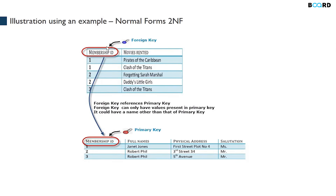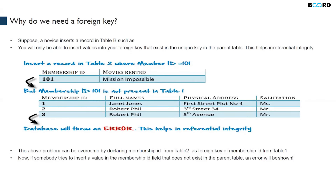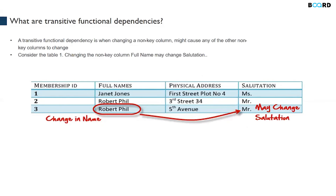A foreign key helps connect two tables through a relationship. Why do we need a foreign key? Let's say you're doing data entry and in table B you enter a value 101. If 101 is not present as a primary key value in the first table, the database will immediately throw an error saying that 101 is not available in the primary key column. This is called referential integrity — the database maintains it automatically.